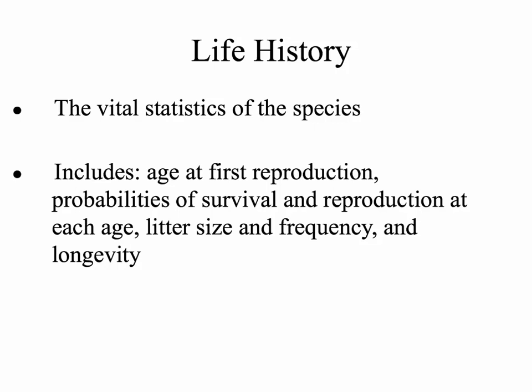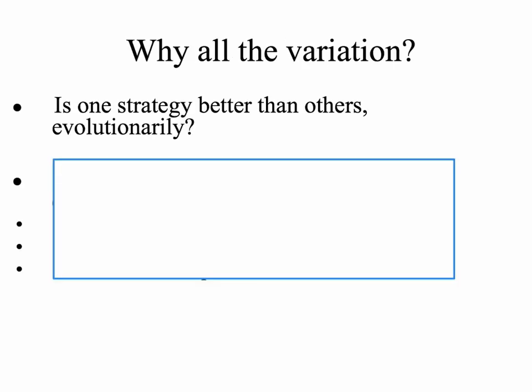This includes age of first reproduction, possibilities of survival and reproduction at each age, litter size and frequency, and longevity of the organism overall. There are many life history strategies, and no one strategy is the perfect answer for every situation. There is a lot of variation because many strategies work in different conditions. If these strategies did not work, natural selection would work to weed them out, and those organisms and species would go extinct.